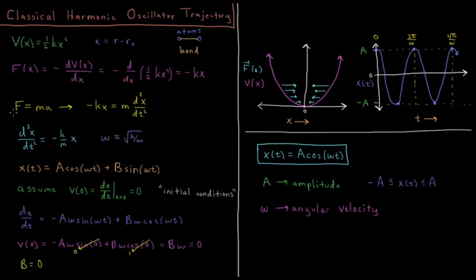We also know from Newton's second law that force equals mass times acceleration, where acceleration is the second derivative of x with respect to time. We have negative kx, the force, equals mass times d²x/dt². The second derivative of x with respect to t equals negative k/m times x, dividing both sides by m.